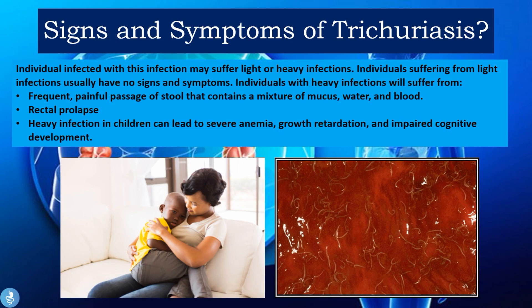Individuals infected with trichuriasis may suffer light or heavy infections. Those with light infections usually have no signs and symptoms. Individuals with heavy infections will suffer from frequent painful passage of stool that contains a mixture of mucus, water, and blood, as well as rectal prolapse. A heavy infection in children can lead to severe anemia, growth retardation, and impaired cognitive development. Adults are usually able to tolerate the disease much better.